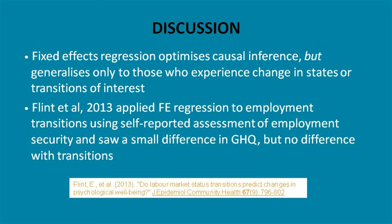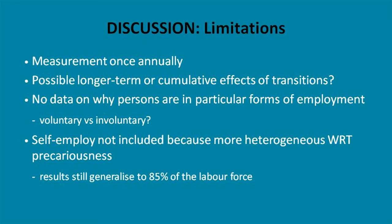So the story is essentially null, but for one unanticipated result of a small improvement for the oldest age group with a transition from permanent to casual. Sensitivity analyses — adjusting for skill level, income, change in job — the results didn't change. Lots of limitations: measurements only once annually, so when did the transition occur? There could be longer-term or cumulative effects — we're only looking at one particular set of exposure dynamics. There's no data on why people are in these forms of employment: voluntary versus involuntary transition.